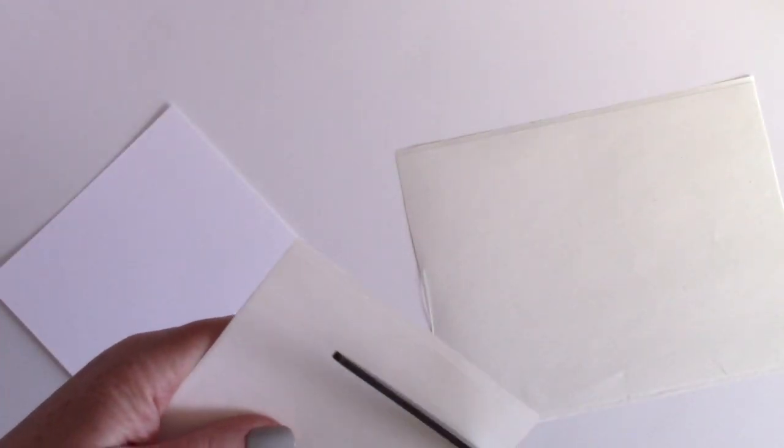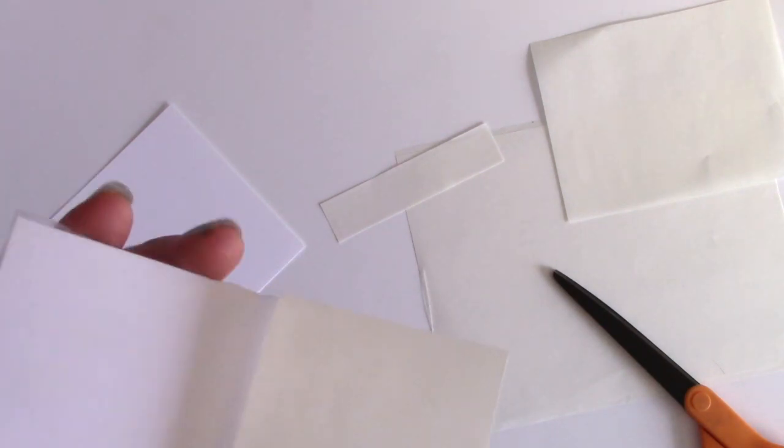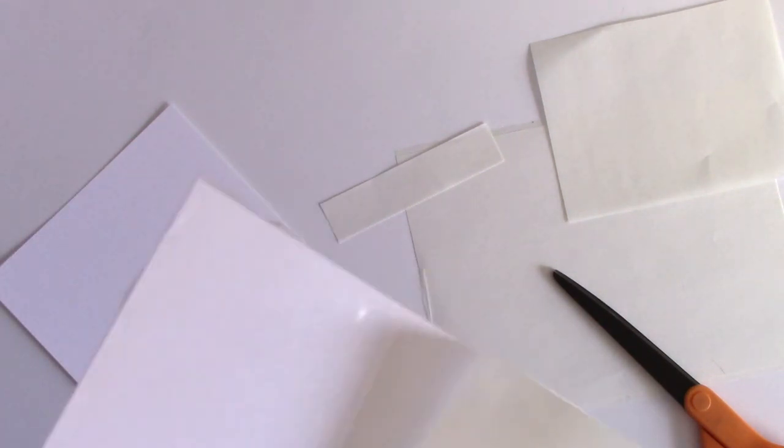Next I'm gonna grab some double-sided adhesive. I love Thermoweb's iCraft easy to cut adhesive. It is very thin, it's a double-sided adhesive. So when you're trimming it, you want to use some nonstick scissors.